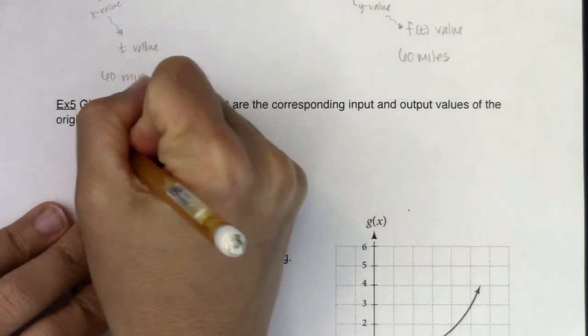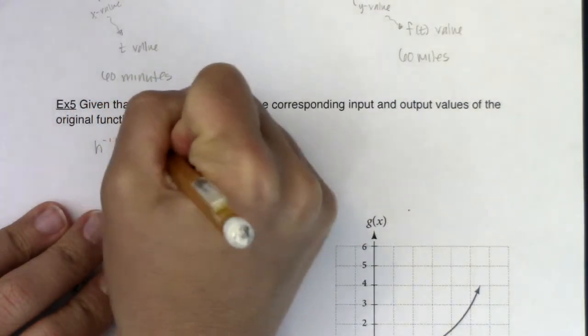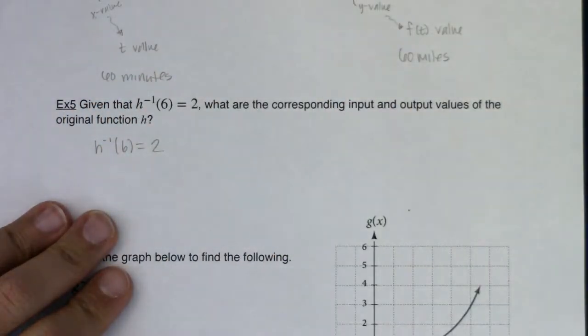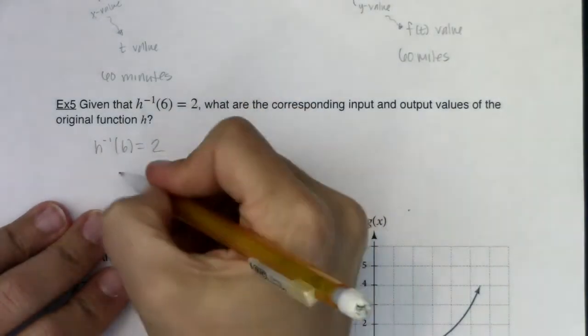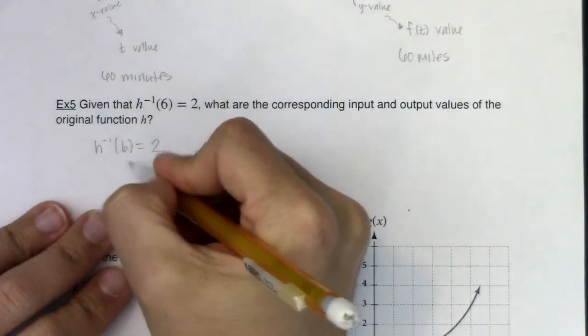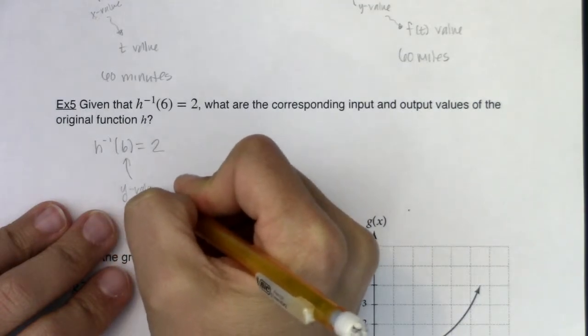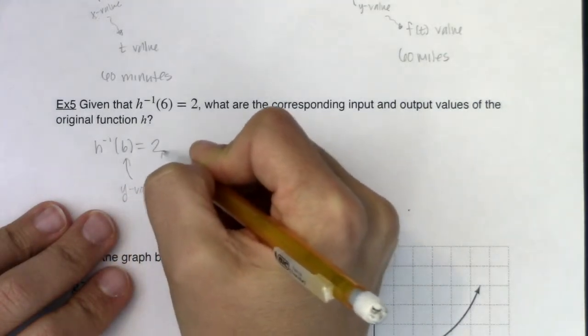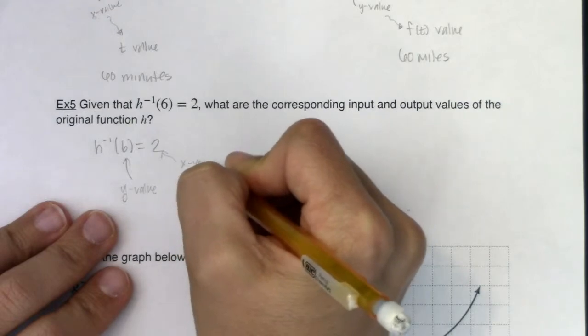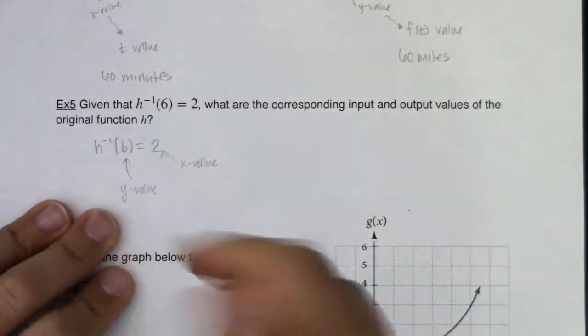So let's unpack this. h inverse of 6 is equal to 2. All right, so like I explained in example 4, if you have the inverse symbol here, this number actually represents a y value. And the output on the inverse function is the x value. So it's backwards from what we've been used to.